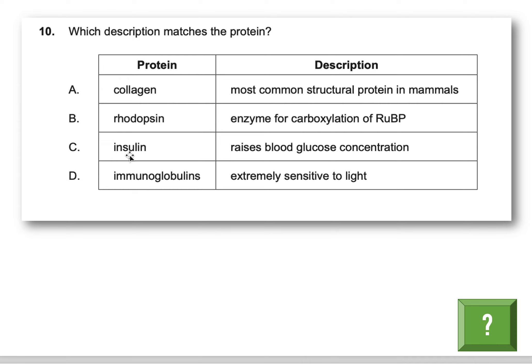Option C: insulin. We know some diabetic people don't have this protein. The purpose of insulin is to lower your blood glucose level — after you eat, insulin is released to bring down blood glucose so it doesn't go too high. They're saying insulin raises blood glucose — no, it does the opposite. It lowers it, which is why people with some forms of diabetes can't bring their blood glucose down.